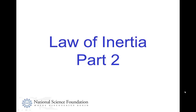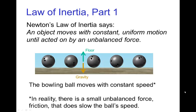Law of Inertia, Part 2. So in Part 1, we saw that Newton's Law of Inertia, which is also known as Newton's first law of motion, says that an object moves with constant uniform motion until acted on by an unbalanced force. In this example of a bowling ball rolling on the floor, the weight of the bowling ball — that downward force of gravity — is being balanced by the upward support of the floor.